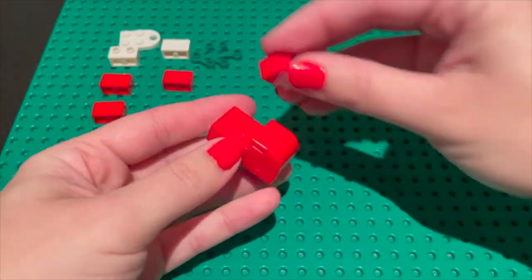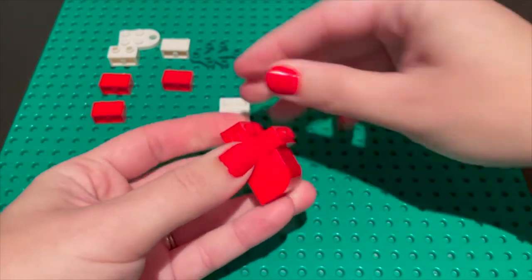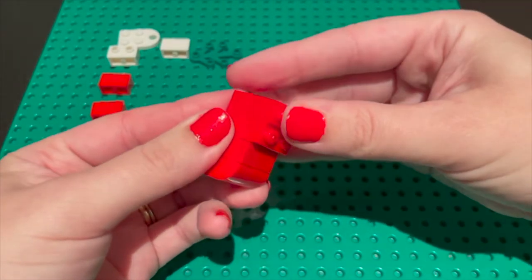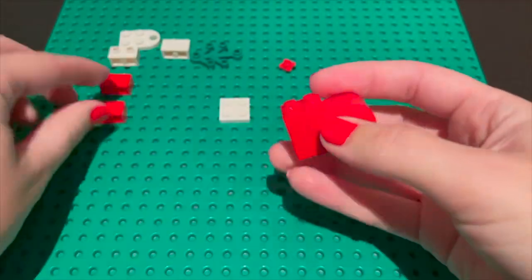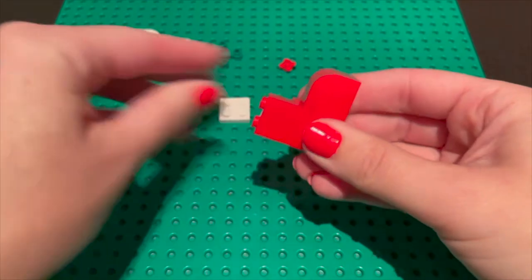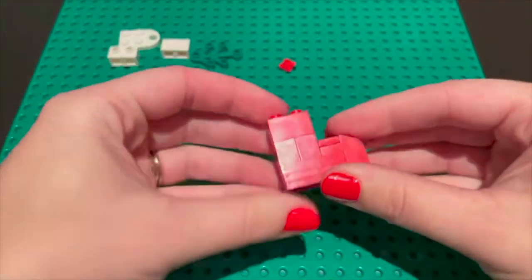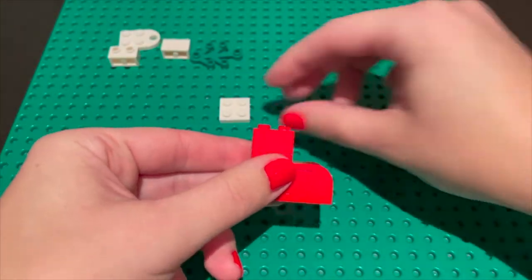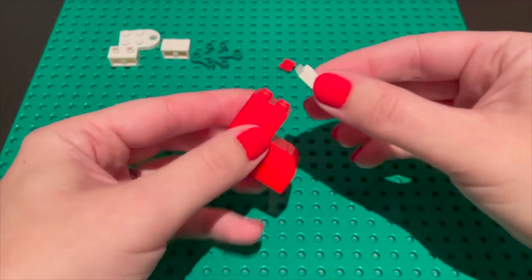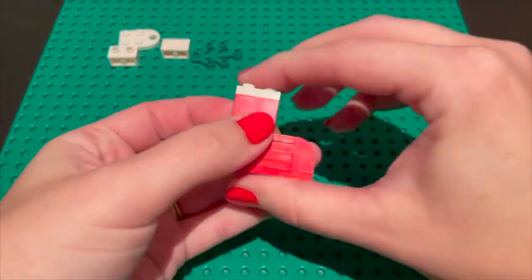Then we're going to build up the leg of the stocking. You can either use two by two bricks or two one by two bricks to stack on top of each other to make the leg part. Then you're going to take a two by two white plate to hold that all together.